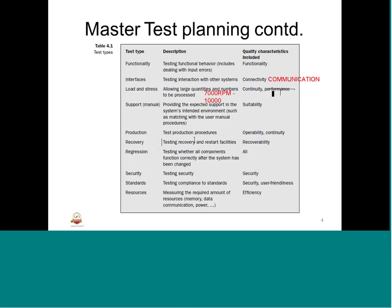Recovery testing involves testing recovery and restart facilities - things like reboot and power-up requirements. This is used under the recovery quality characteristic. Regression testing checks whether all the components function correctly after the system has been changed, due to bug fixes, upgrades, or reproduced test failures. Regression can have any of these quality characteristics.